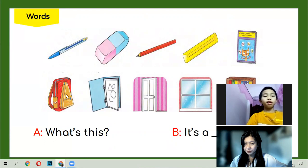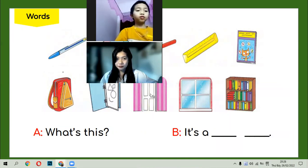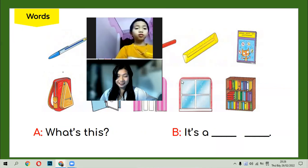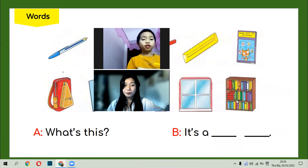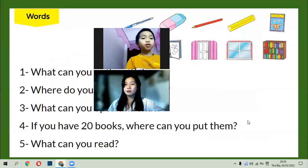What's this? It's a folder. Folder. Folder. What's this? Door. Door, very good. What's this? Window. Window. And it's a bookcase. Bookcase, bookcase, very good.